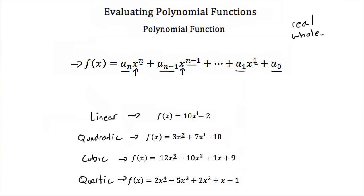Now some important terminology with polynomial functions. Whatever our highest exponent is, that exponent is called our degree. So the degree of a linear function would be 1, the degree of a quadratic function would be 2, cubic would be 3, and quartic would be 4.